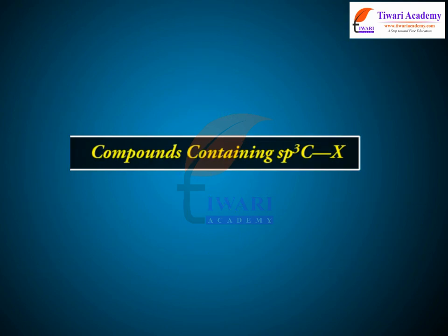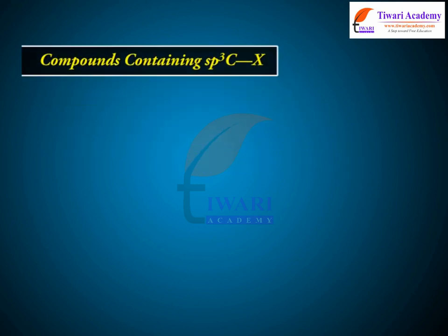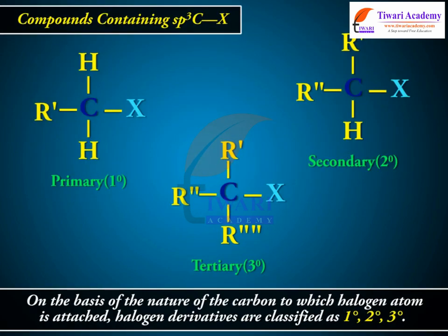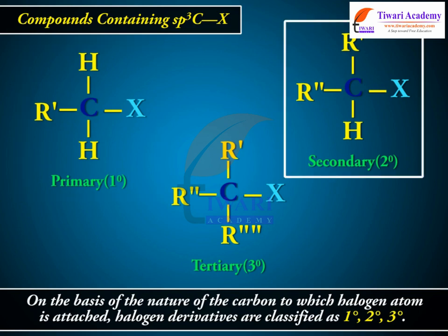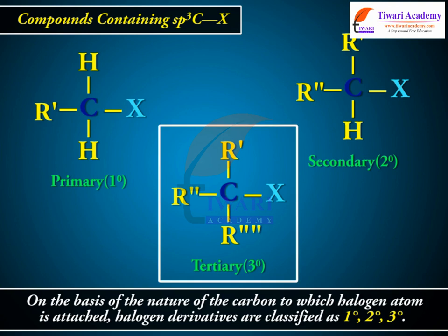Compounds containing Sp3 C–X bonds. On the basis of the nature of the carbon to which the halogen atom is attached, halogen derivatives are classified as 1°, 2°, or 3°.